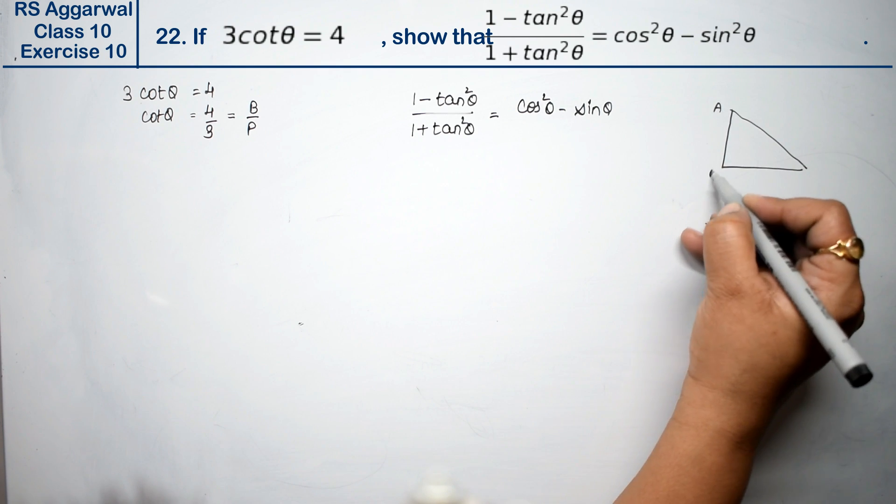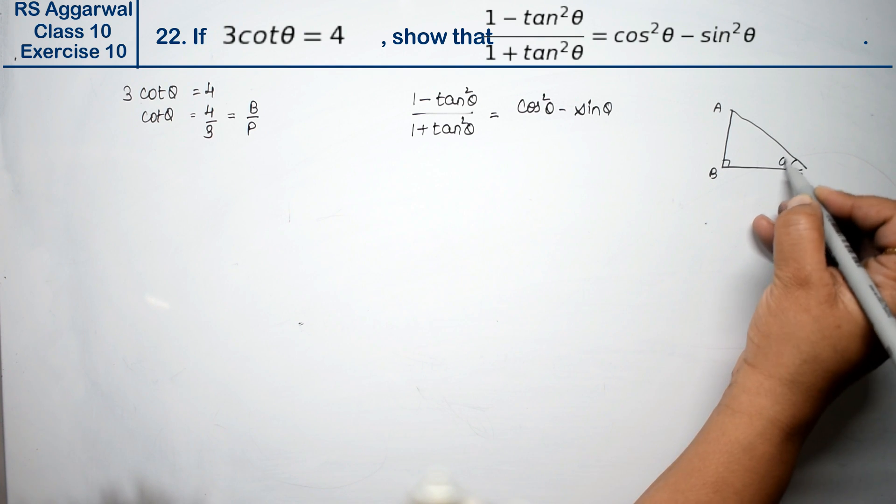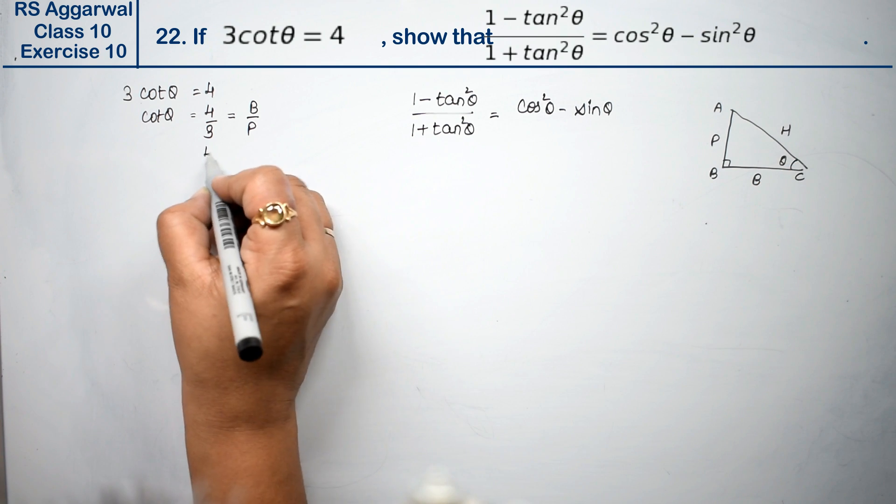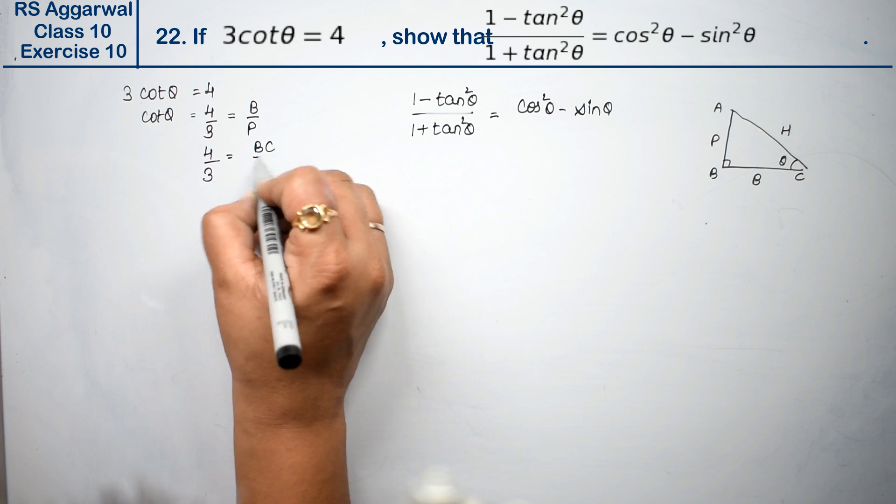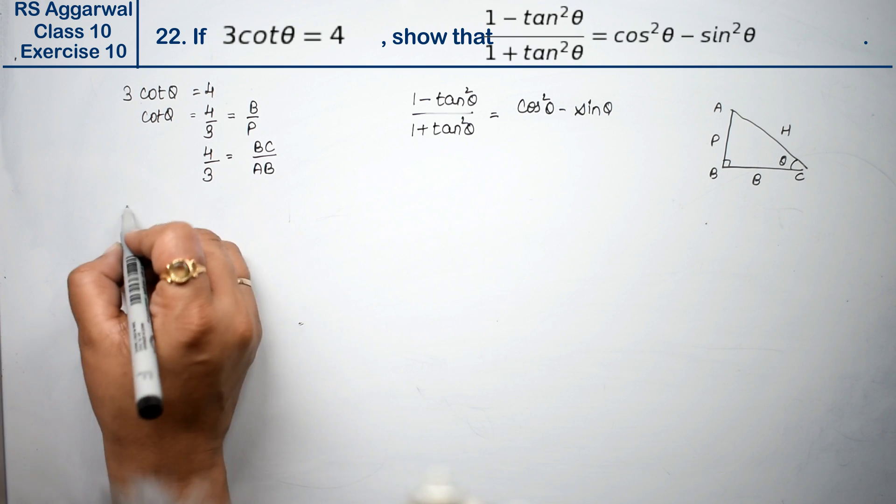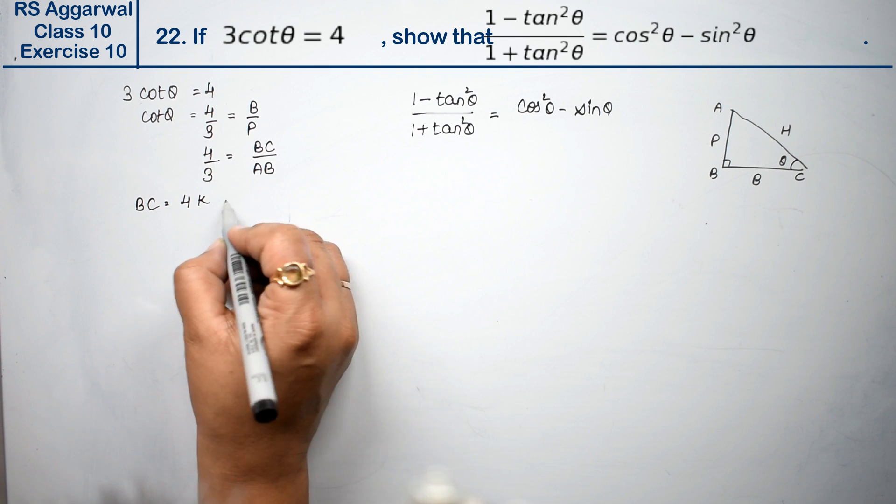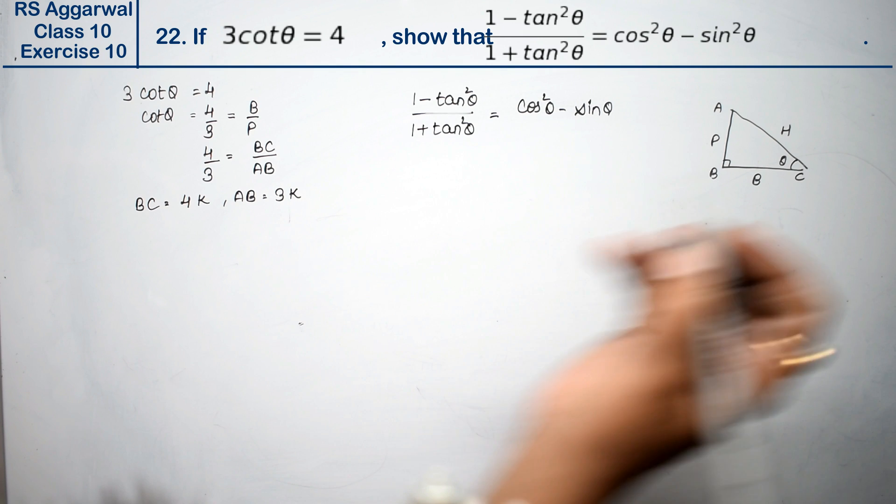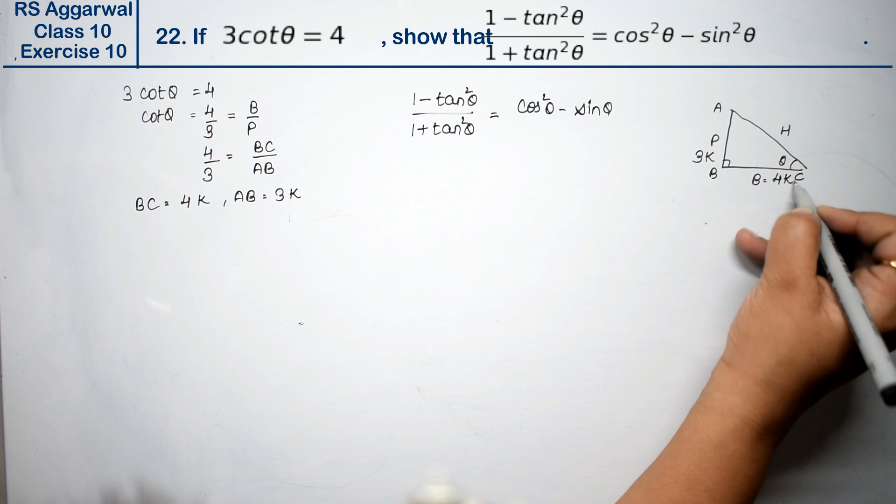So base is which side of the triangle? We have to find that. So we will do the naming as ABC and this is our 90 degree and this is our theta. So this is perpendicular, this is base, and this is hypotenuse. 4 upon 3 equals to base which is BC, and perpendicular is AB.